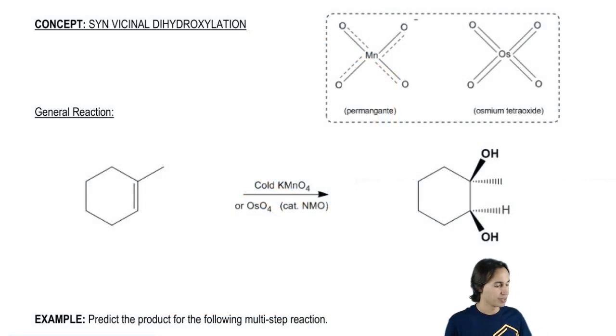So how does this work? Basically we have these two very special reagents. We have potassium permanganate and we have osmium tetroxide. This is KMnO4 and OsO4 that are both highly capable of adding oxygens to double bonds. Now it turns out that this mechanism, you're not going to need to know the whole thing. But what you do need to know is you need to know what the end product is going to look like.